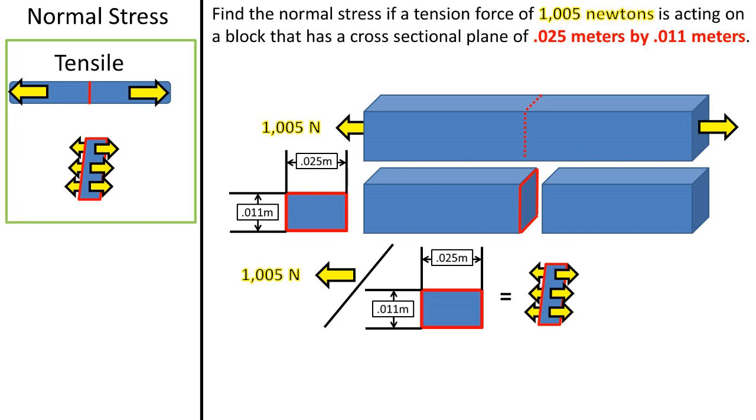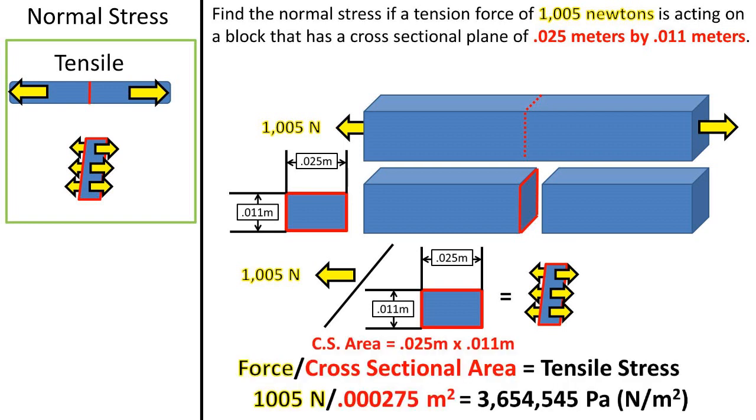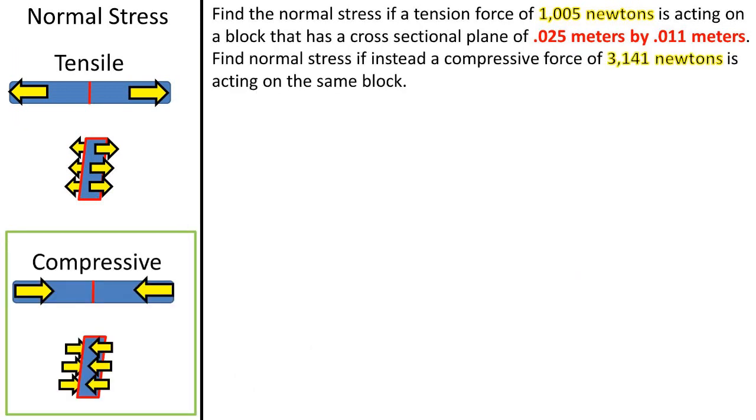So if we take the force acting 90 degrees perpendicular to the cross-sectional plane and divide it by the area of the cross-sectional plane, we will get the tensile stress. After plugging in all of our numbers, we get a tensile stress of 3,654,545 pascals or newtons per meter squared.